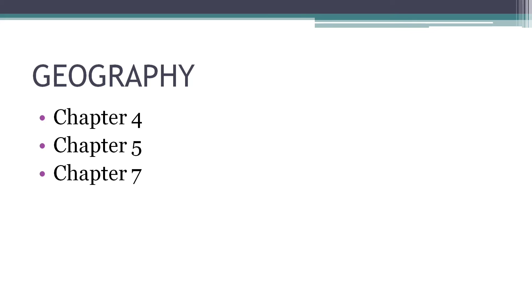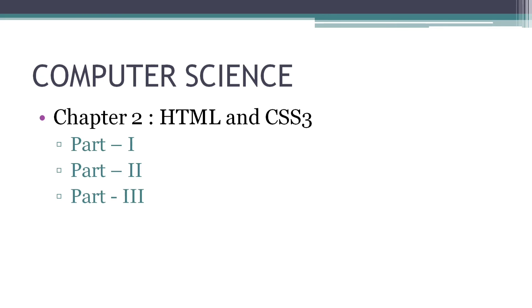Continuing Advanced Maths — about Chapter 3 and Geography Chapter 4, 5, and 7. For Computer Science: only Chapter 2, which has three parts — all the parts you have to prepare for the examination.